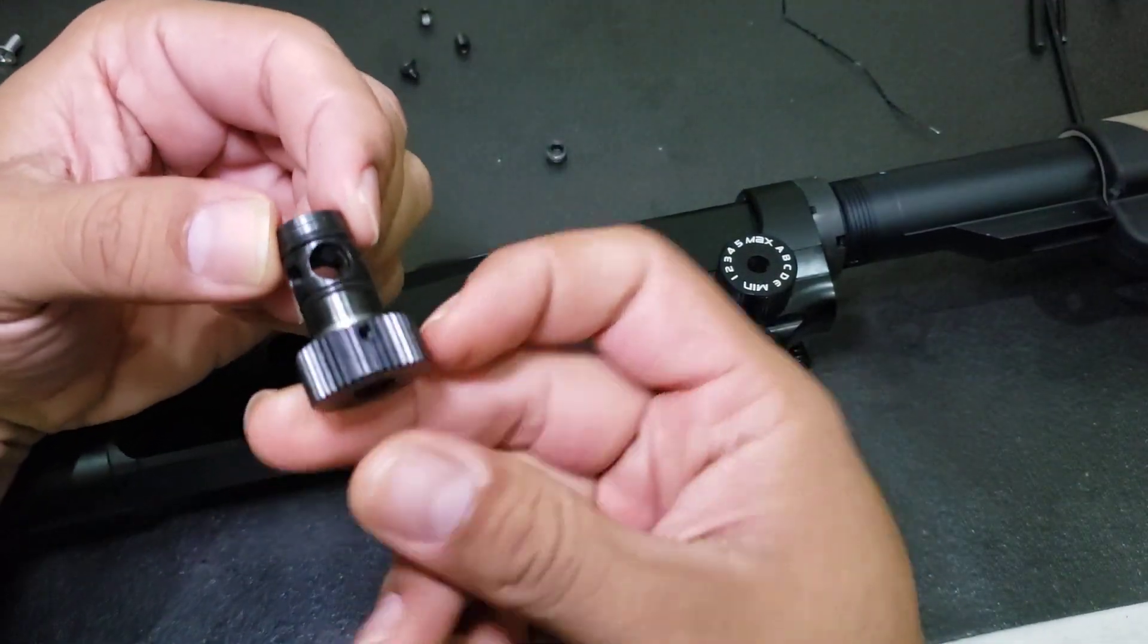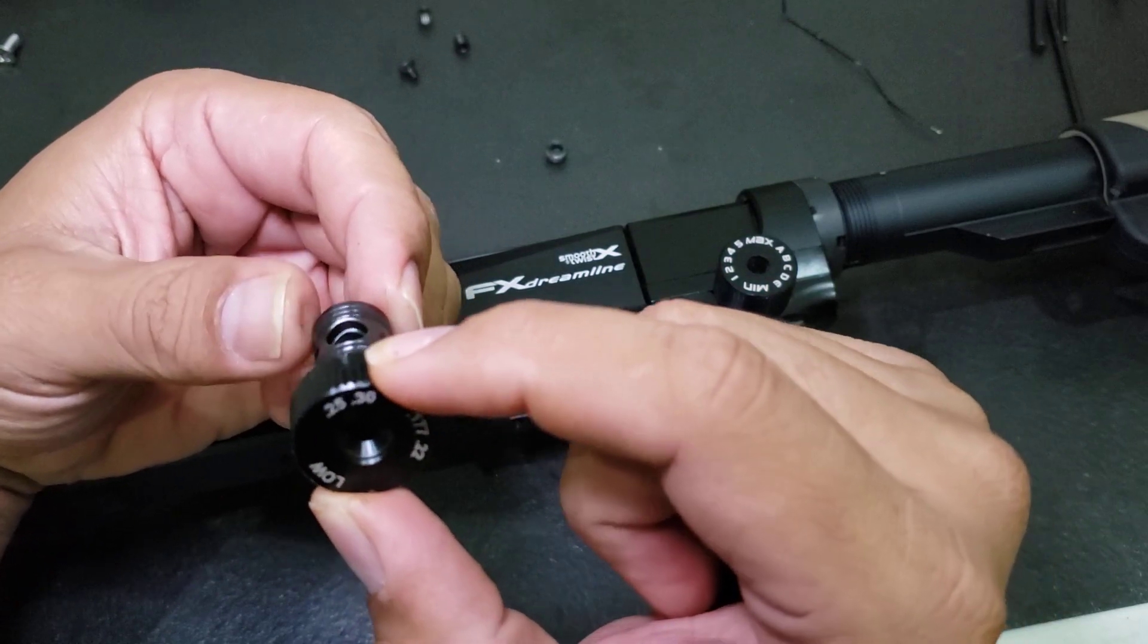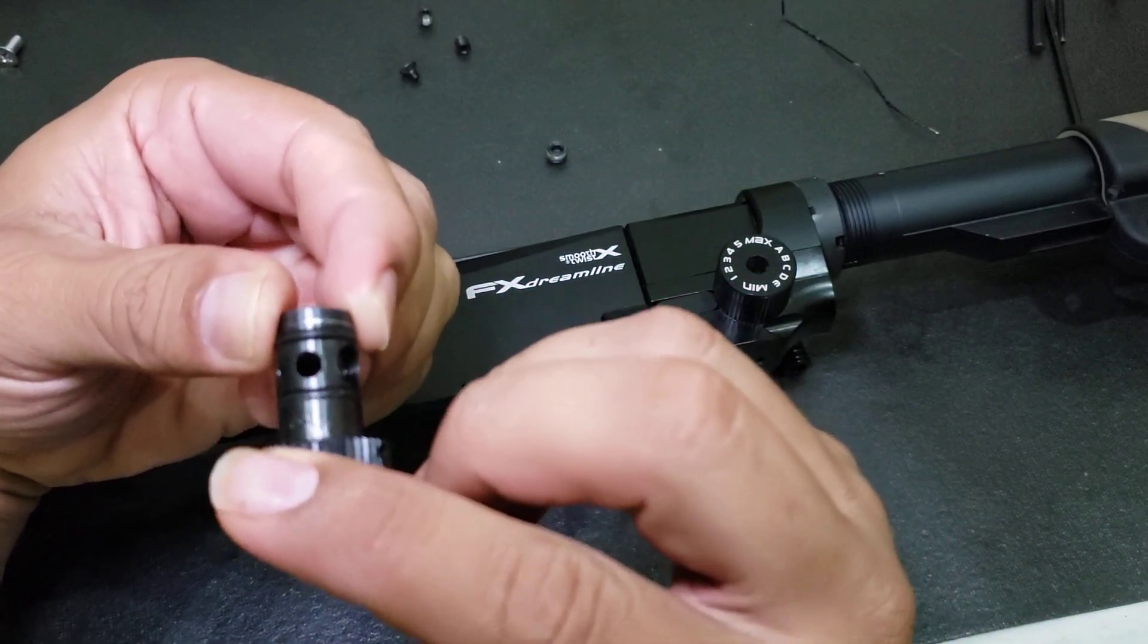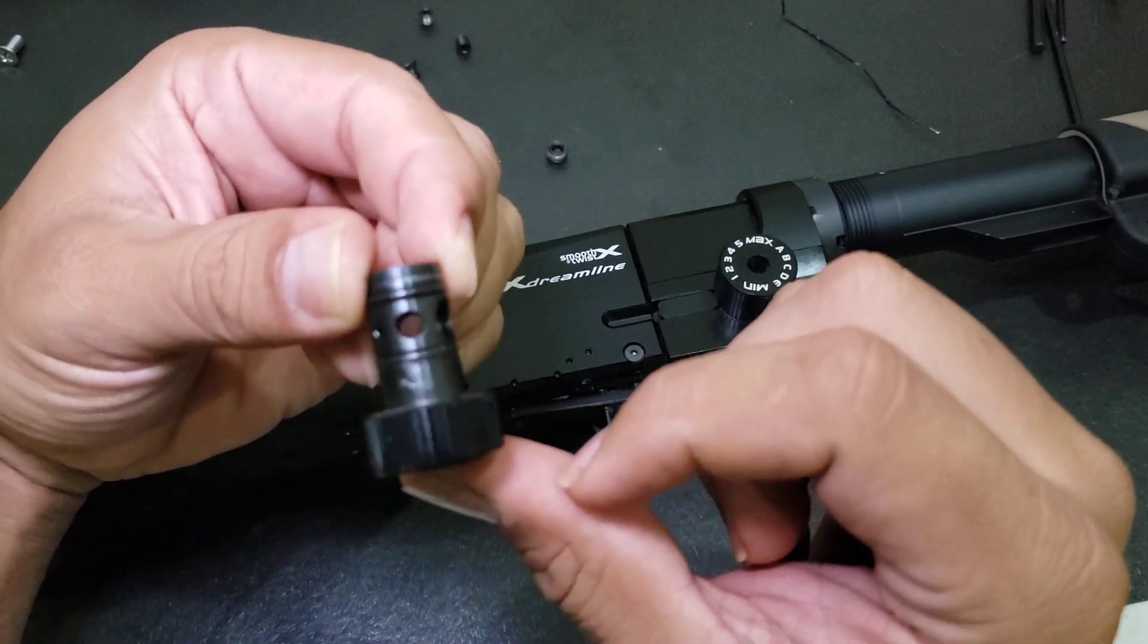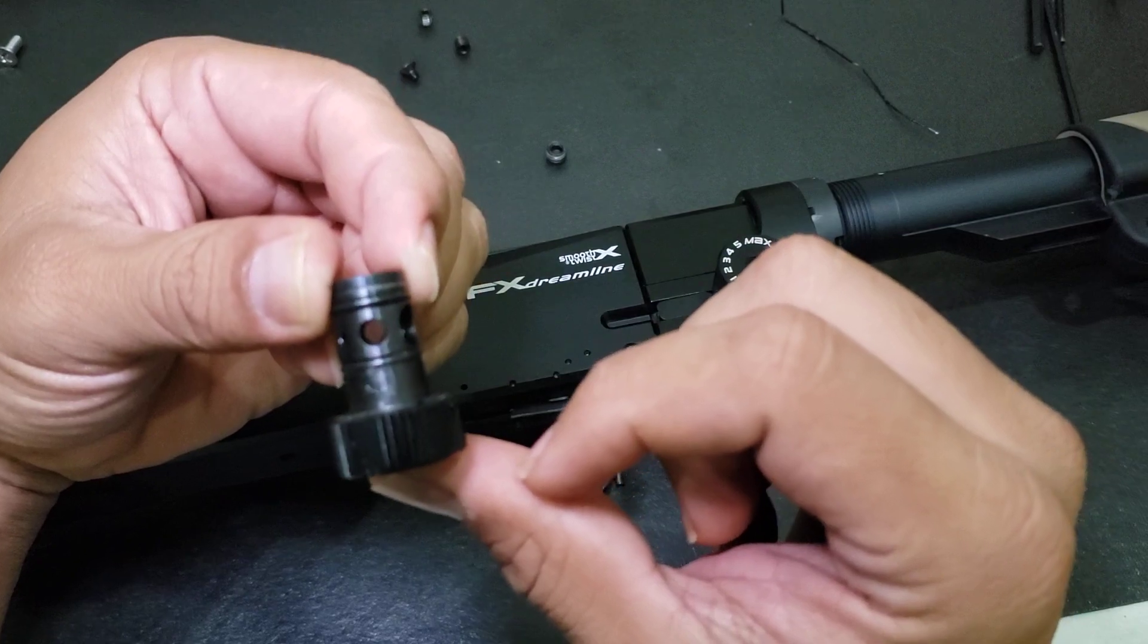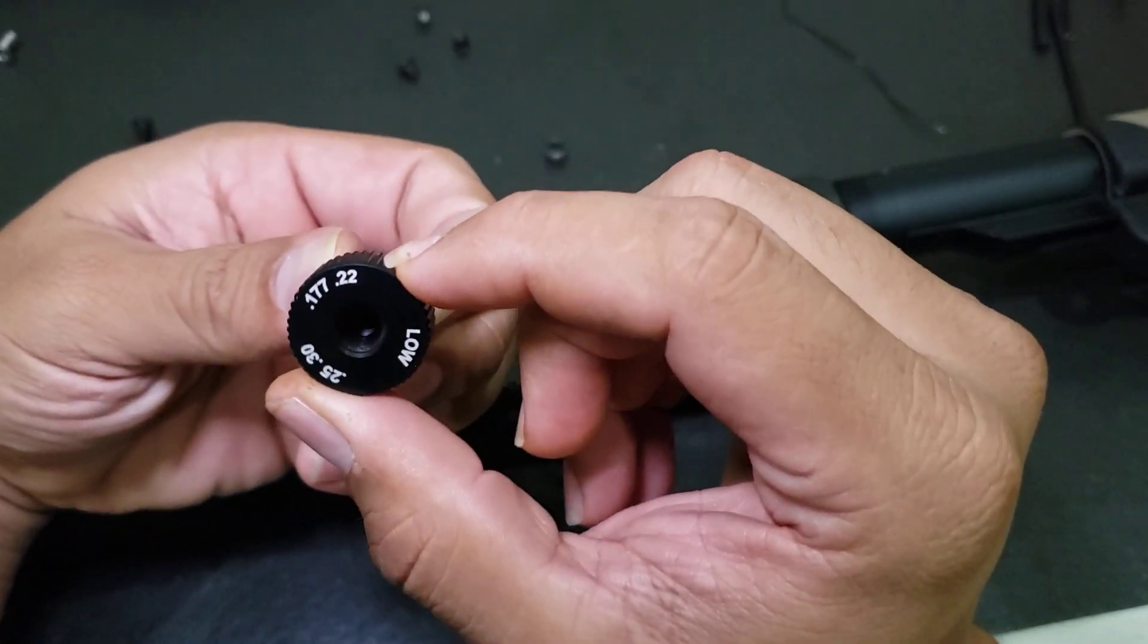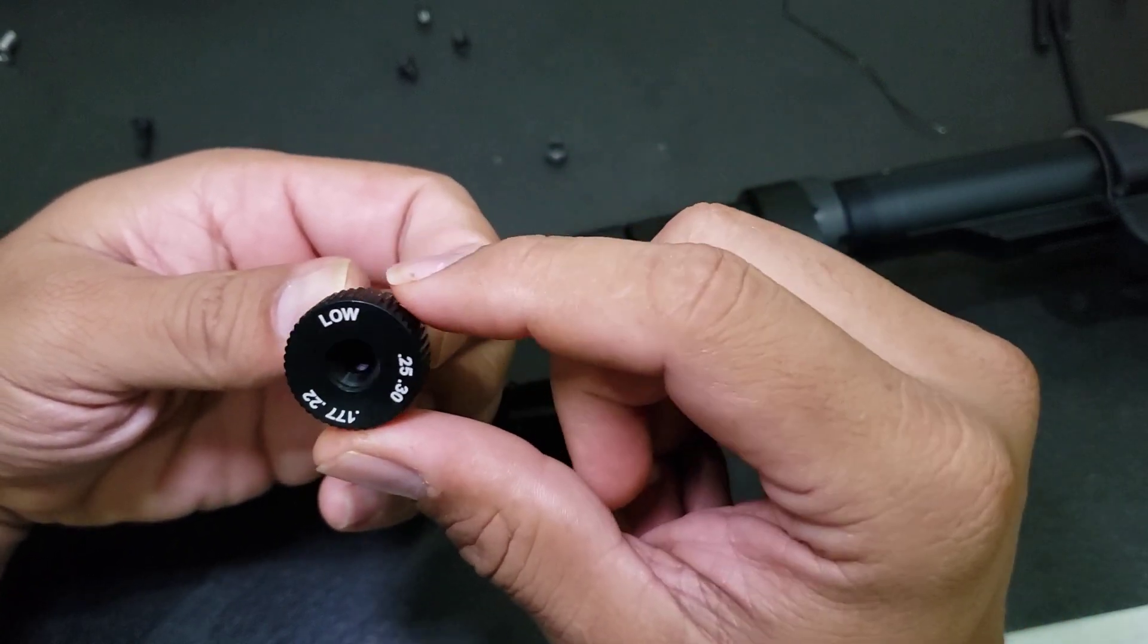So this part works like this: if you have 25-30, this is the biggest hole as I say. Or if you want less power, you turn to this point and you will see the hole now is smaller. And if you want even lower power, you make the hole smaller.